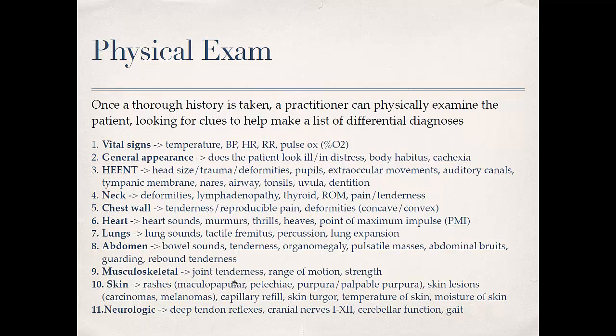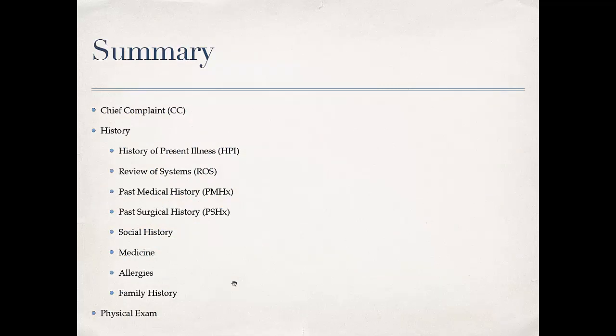If you want to Google some of these terms you can, but at this point it's not necessary. We just want to give you an idea so when you go over a case in small group, you'll be able to say for arthritis we should focus on the musculoskeletal system as well as vital signs. Certain types of arthritis have weight loss and systemic symptoms you won't find in regular osteoarthritis. So to summarize: every time you see a new patient, figure out the chief complaint, get a thorough history covering HPI, review of systems, past medical and surgical histories, social history, medications, allergies, family history, and then do a physical exam. Thank you.